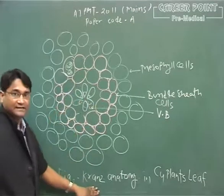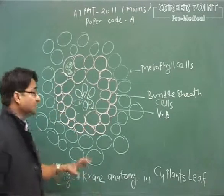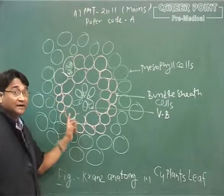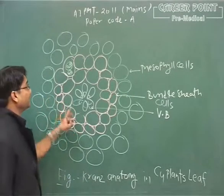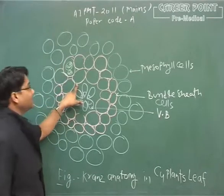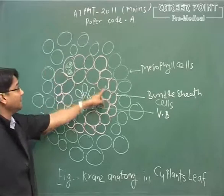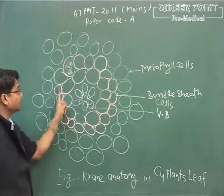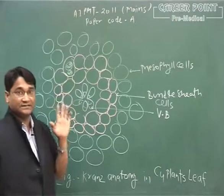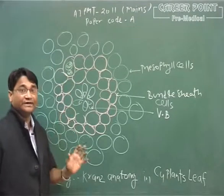Now the question is about the feature of bundle sheath cells. The bundle sheath cells of C4 plants are comparatively thick-walled, without the intercellular spaces, and possess large numbers of chloroplasts. Actually, we have to know this.